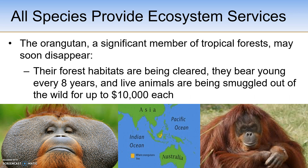The orangutan also has the longest childhood dependence on the mother of any animal in the world. Because there is so much for the young orangutan to learn in order to survive, the babies will nurse until they're about six years old. Orangutans also bear young every eight years — the longest time between births of any mammal on Earth — giving them a very low reproductive rate. A female orangutan may only have four to five babies in her lifetime, which is why populations are slow to recover from land disturbances.